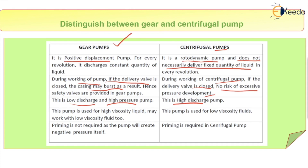In the case of a gear pump, it is used for high viscosity liquids — it may also work for low viscosity, but its main purpose is for higher viscosity fluids. In the case of a centrifugal pump, it is used for low viscosity fluids only. Regarding priming: for a gear pump, priming is not required at all because it creates negative pressure itself. In the case of a centrifugal pump, priming is required.